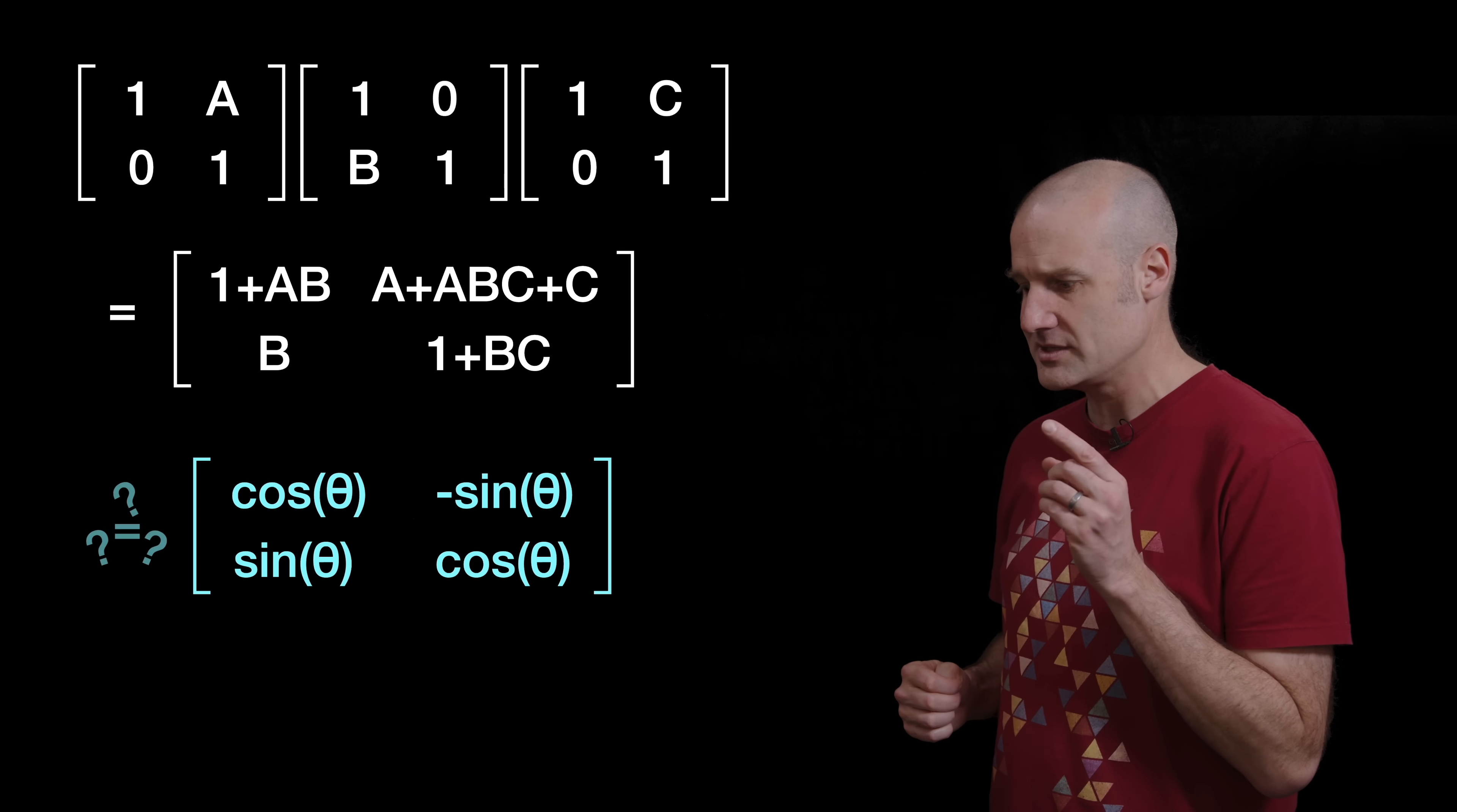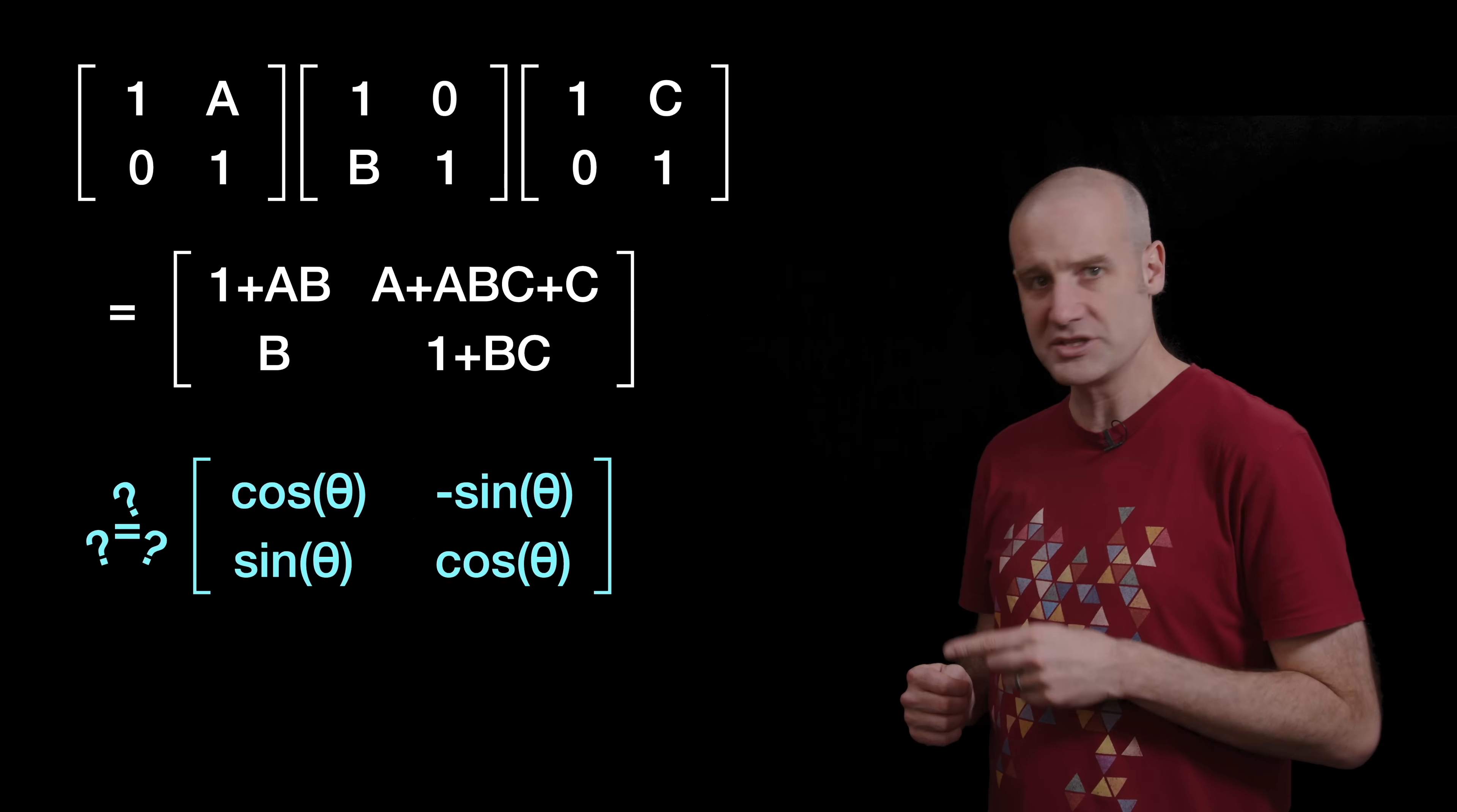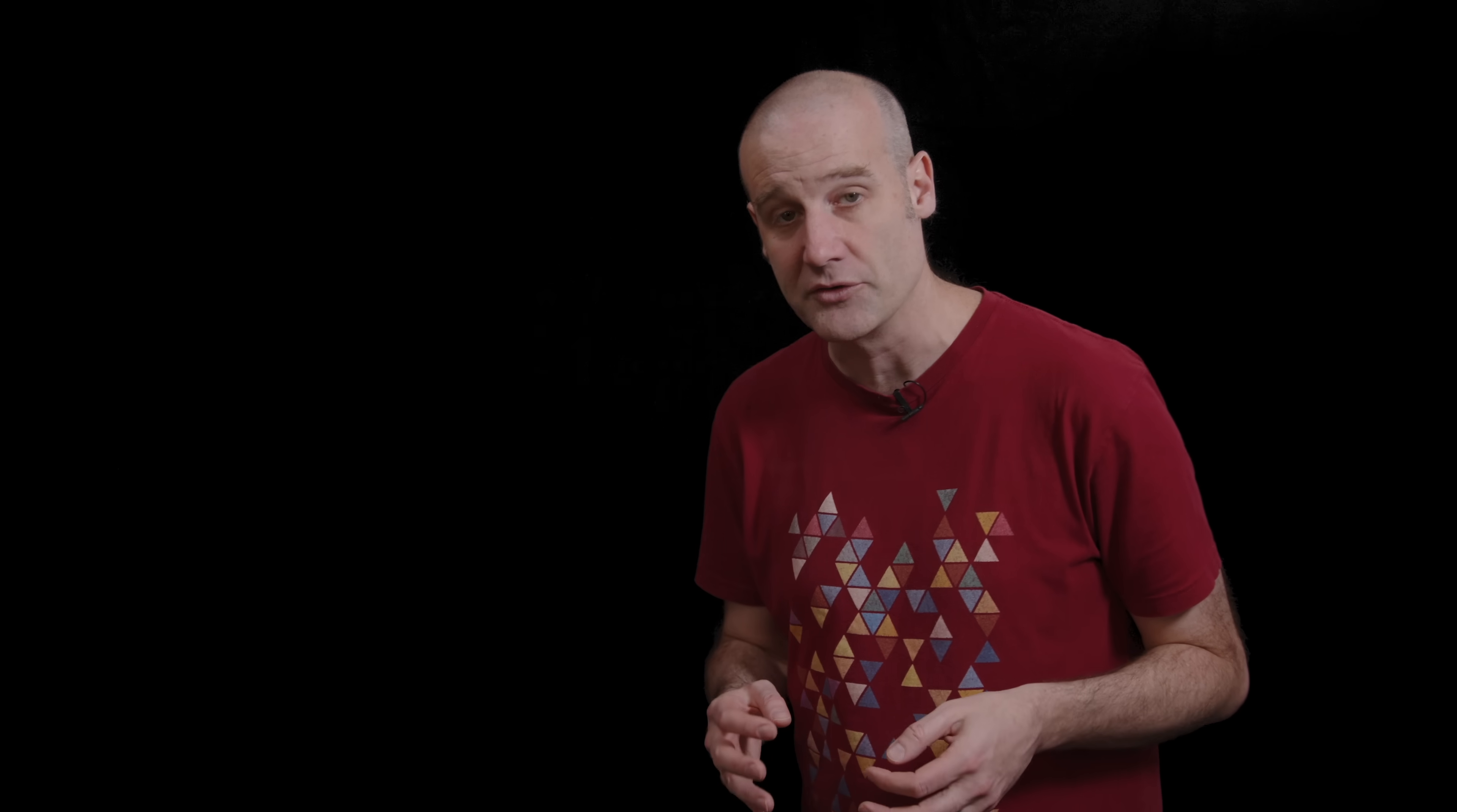you can either trust me or you can look it up. Your choice. And all we have to do now is show that this three skew matrix is the same as the rotation matrix. And we can do that because it's just a bunch of simultaneous equations. We've got four equations here and we have to solve them. Now that can be done but I can't.